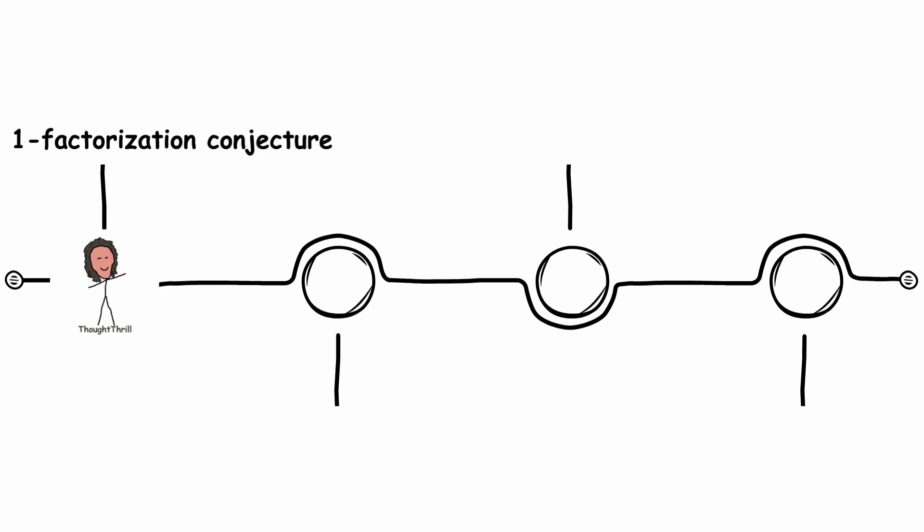One factorization conjecture. In mathematics, a graph consists of points, known as vertices, and any connections between those points called edges.